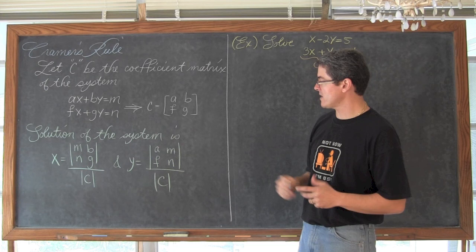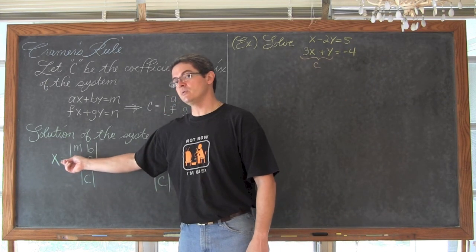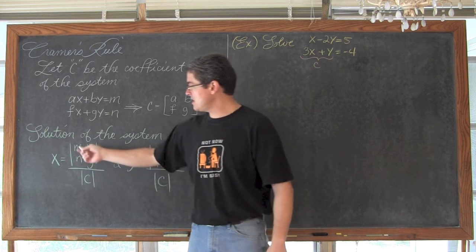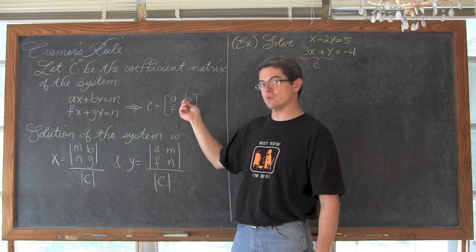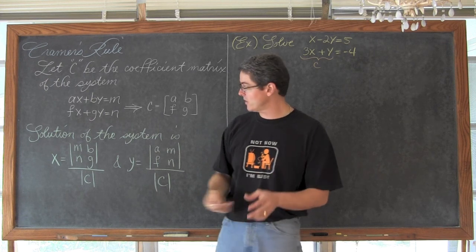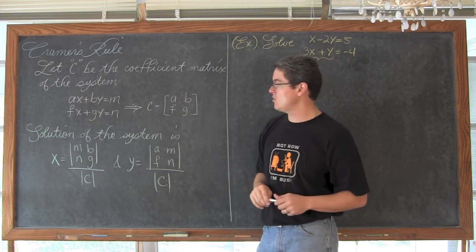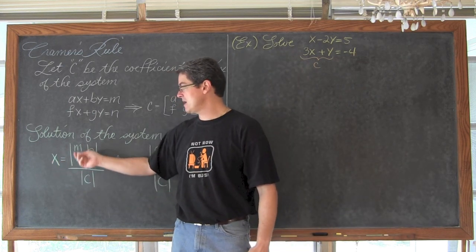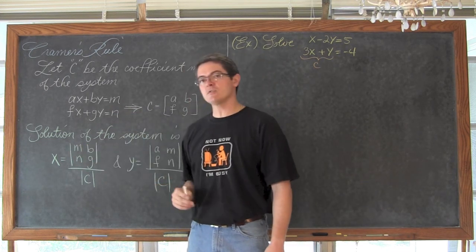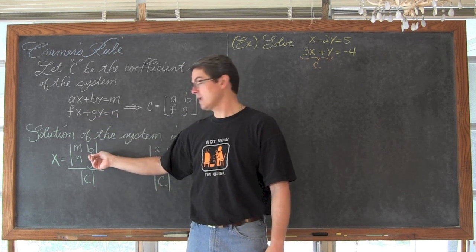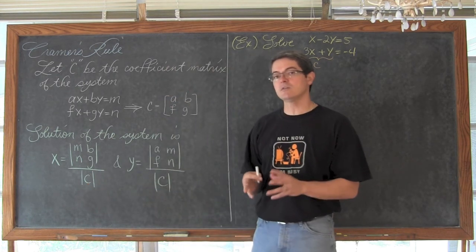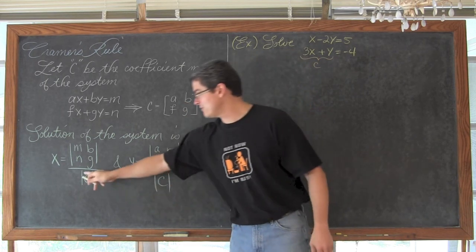The solution to the system of equations: x is going to be equal to a new matrix where we take out the a and the f in the coefficient matrix and replace them with the constants m and n. Notice the x and y's are on one side and just the constant value on the right. So if you want to solve for x, you take the coefficient matrix, take out the coefficients of x, plug in those values of m and n in that first column, keep the b and the g — the coefficients of y — and find the determinant of that 2 by 2 matrix, then divide by the determinant of matrix C.